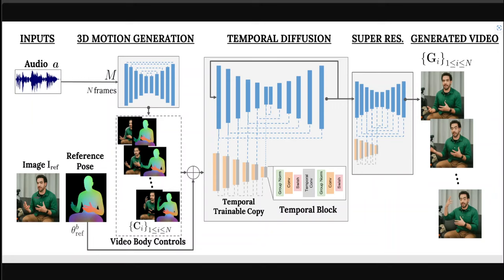They have also compiled a new large-scale dataset which is called MENTOR, which is significantly larger than any other before it, containing 2,200 hours of footage and 800,000 identities, plus a test set with 120 hours and 4,000 identities. This dataset helped them fine-tune and evaluate their main innovation.